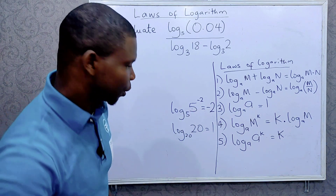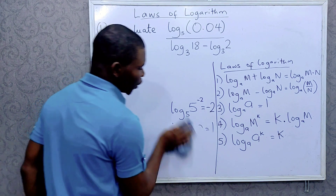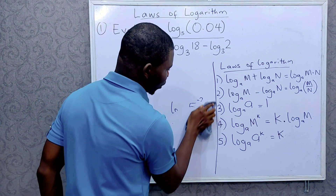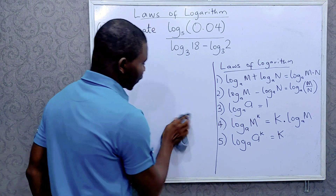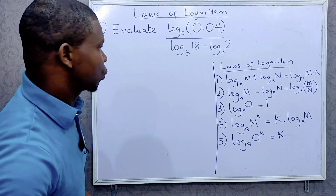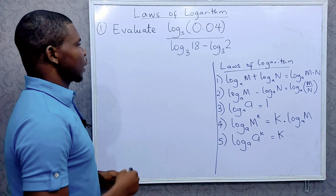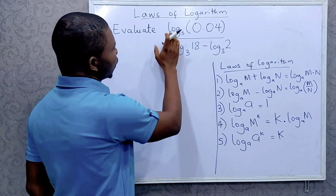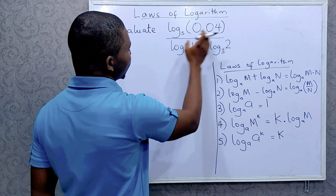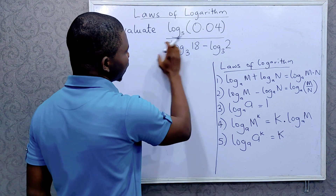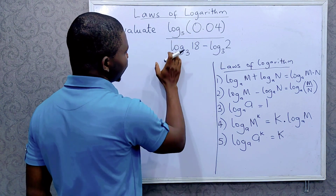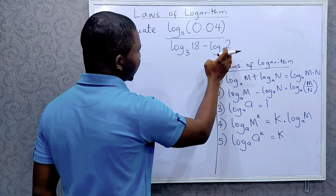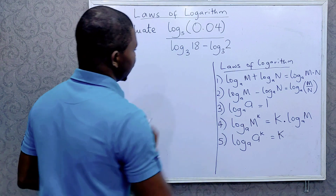Good. So these are some of the laws of logarithm, and we are going to be applying them in this question. The first one says: evaluate log base 5 of 0.04, divided by log base 3 of 18 minus log base 3 of 2.